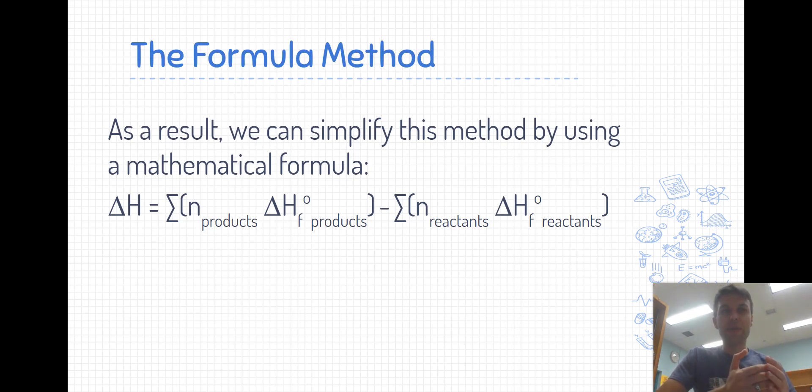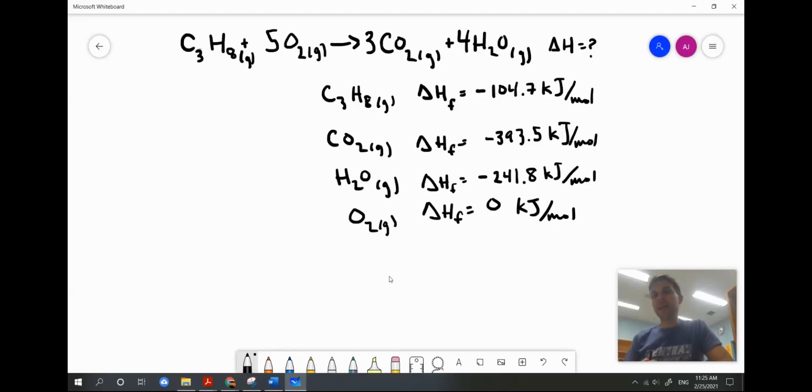the heats of formation of the reactants, each multiplied by their molar coefficient in the target reaction. It looks like a complicated formula, but it really is quite simple. Let's take a look at an example. For this example, using the formula method, I'm going to use the same target equation as we looked at in a previous example. Here we have the combustion of propane.